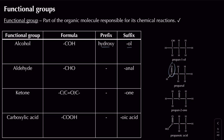In an aldehyde, the carbon-oxygen double bond is at the end of the chain, with a hydrogen on one side and the rest of the carbon chain on the other. A ketone has the same C=O double bond, but it is not at the end of the chain — there's a carbon attached on either side. An aldehyde ends in '-al' and a ketone ends in '-one'.